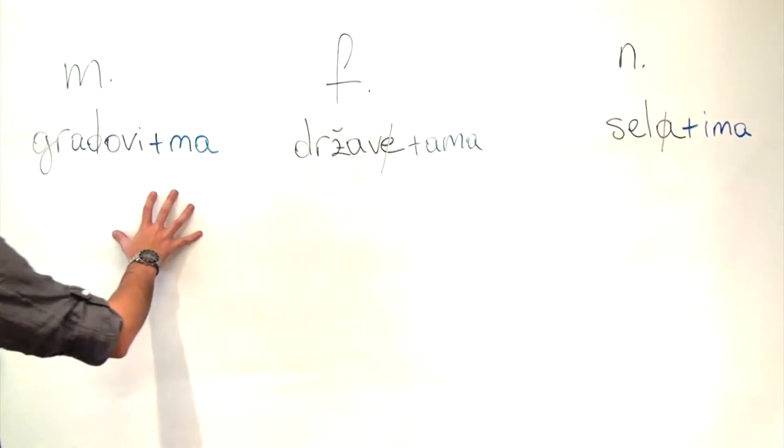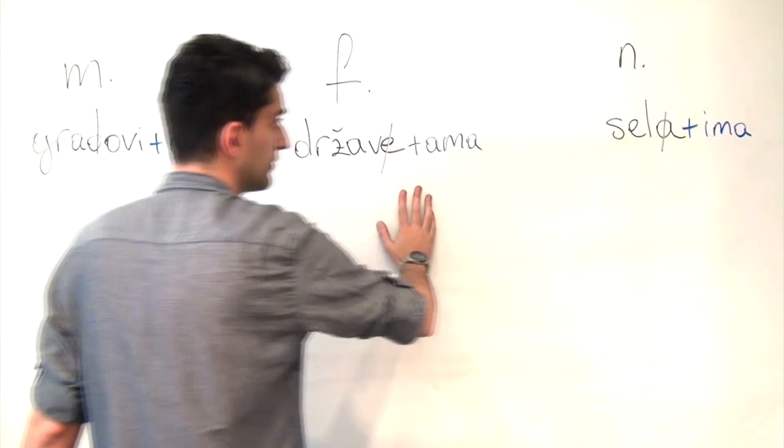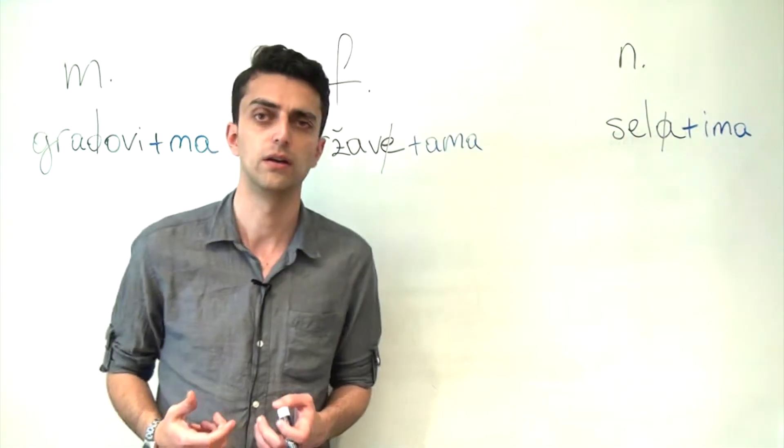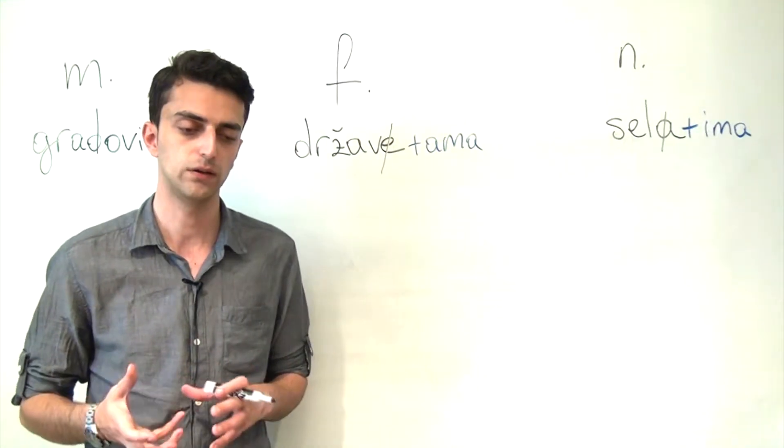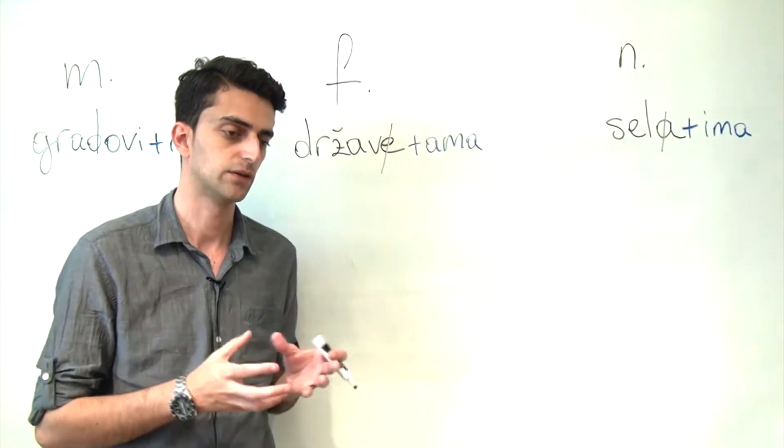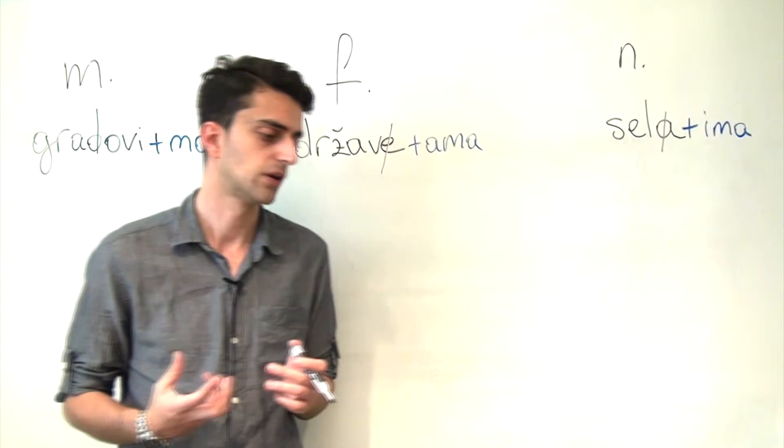Now, what we have here are plural nouns that are already in the locative case. So we have gradovima, državama, and selima. We will need to find appropriate adjectives to illustrate which suffixes you need to turn adjectives that will be used adjacent to or to further describe these nouns in sentences.